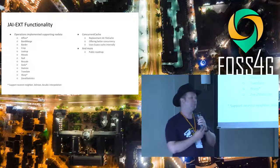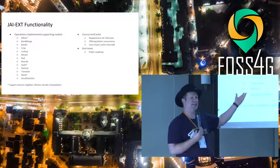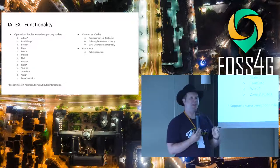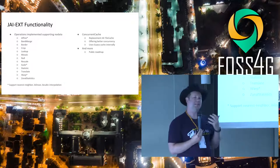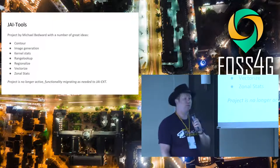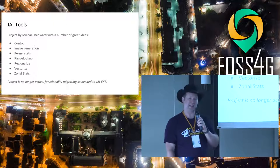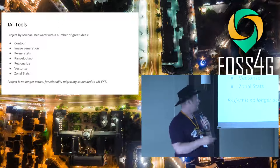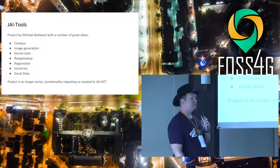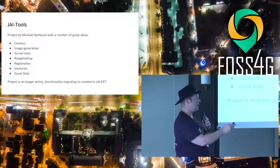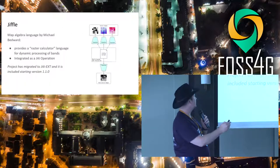One thing of interest is we've actually taken whole central components — this concurrent tile cache — and ripped out and replaced them. This library has a very good architecture that enabled us to do this. There's a little JAI Tools project that adds creative bolt-ons and lets you dynamically generate stuff. Now this project's no longer active, but we've been mining it for good ideas, and they've been showing up in JAI Extension.